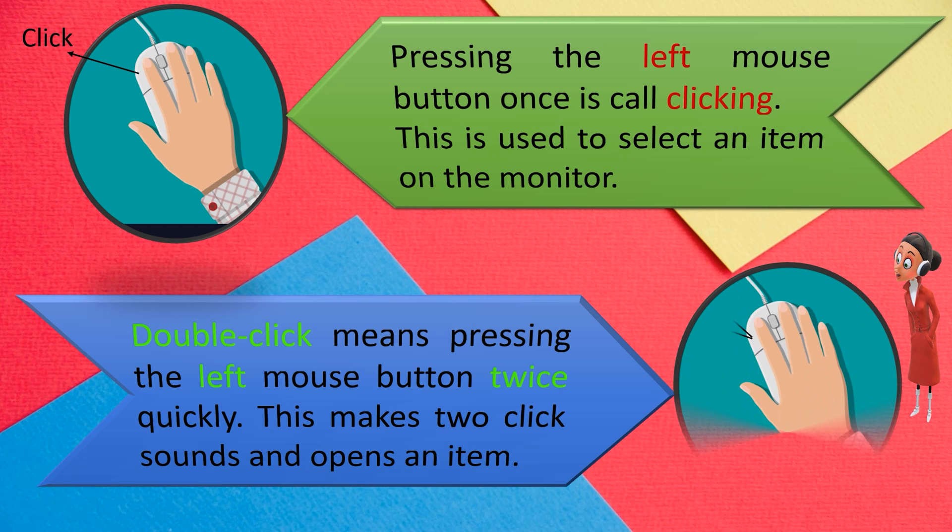Double click means pressing the left mouse button twice quickly. This makes two click sounds and opens an item.